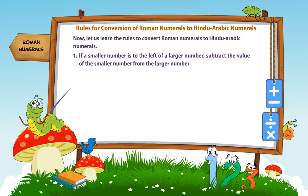Rule number 1. If a smaller number is to the left of a larger number, subtract the value of the smaller number from the larger number.